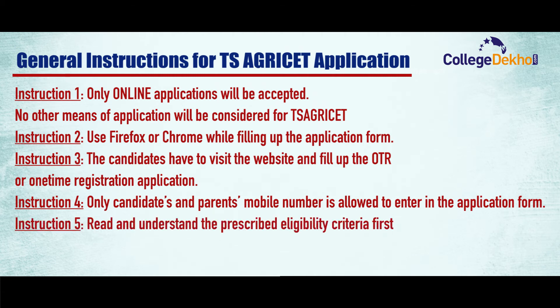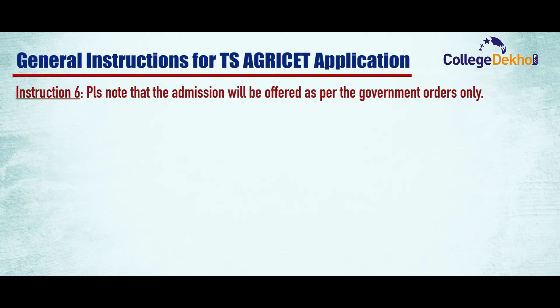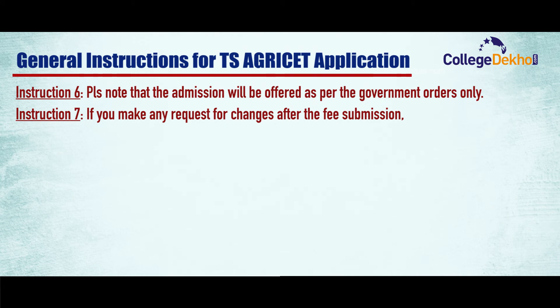Instruction 5: Read and understand the prescribed eligibility criteria first, and then move on to apply. Instruction 6: Please note that admission will be offered as per the government orders only. Instruction 7: If you make any request for changes after the fee submission, it will not be entertained on any ground.